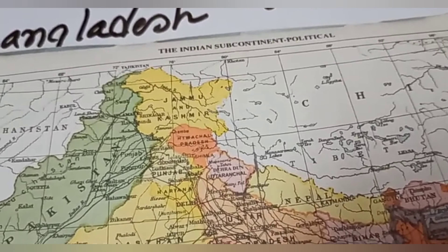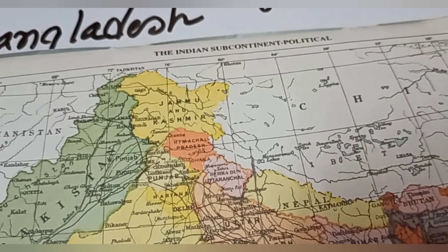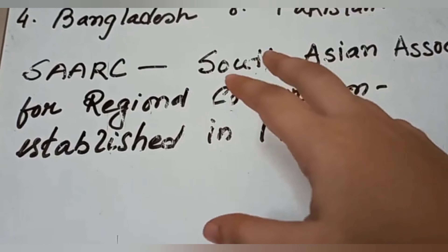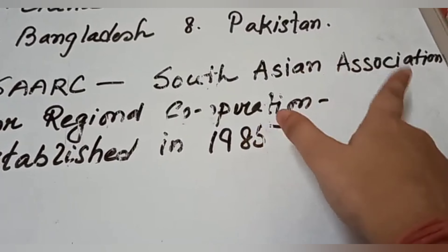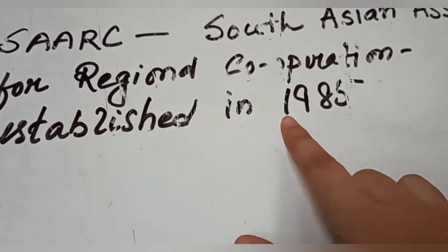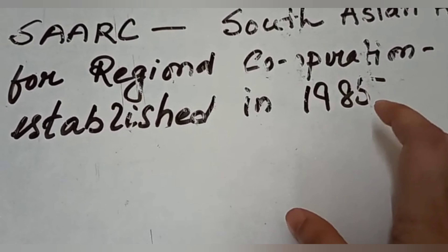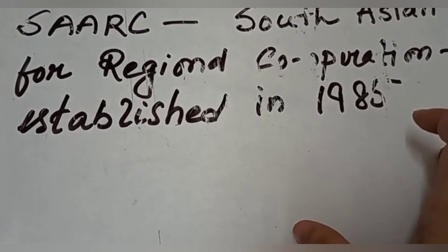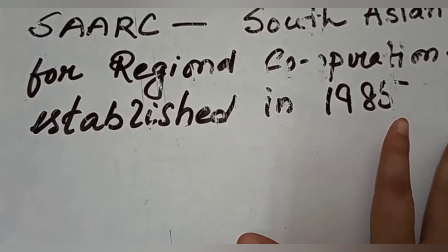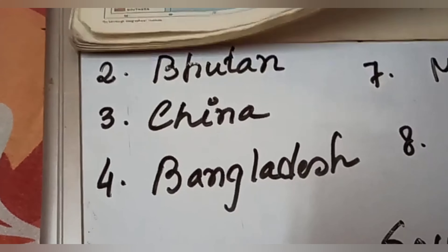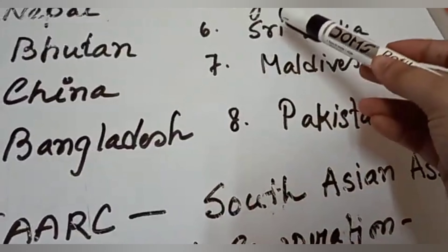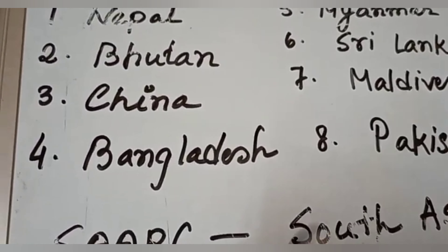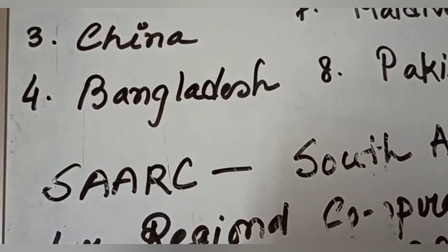For the purpose of maintaining peace and harmony, an organisation was formed named SAARC, whose full form is South Asian Association for Regional Cooperation, established in the year 1985. This organisation emphasises the importance of mutual cooperation and understanding among different nations in the Indian subcontinent. The members of SAARC are India, Bangladesh, Nepal, Bhutan, Myanmar, Maldives, Sri Lanka, and Pakistan. The headquarter of SAARC is located in Kathmandu.